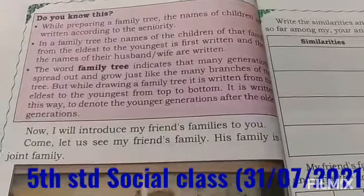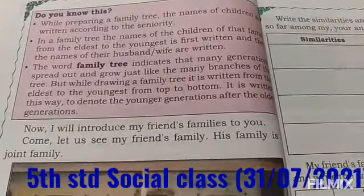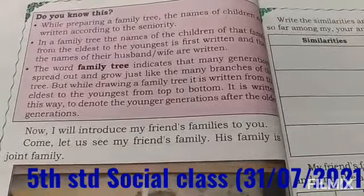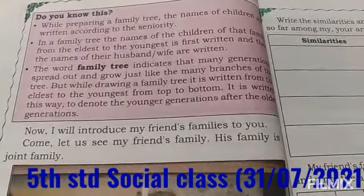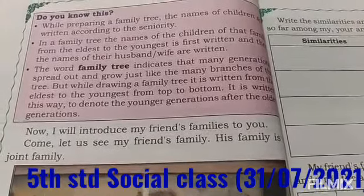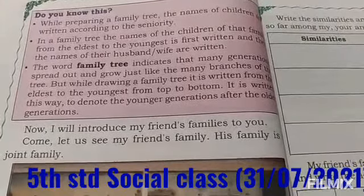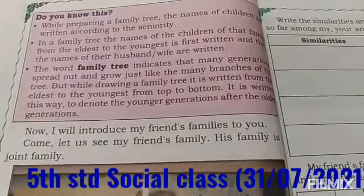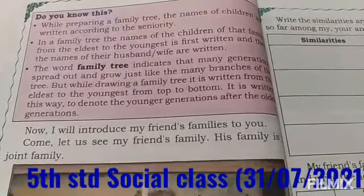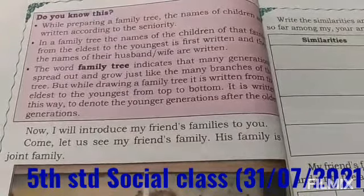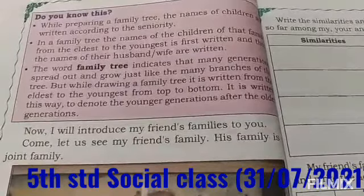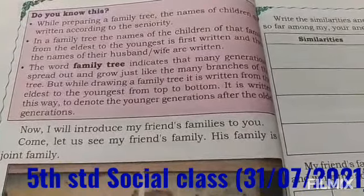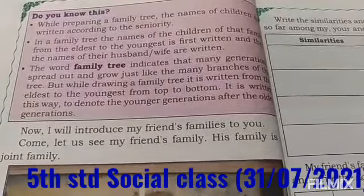So now tell me: what is joint family? Joint family means a family where more than two generations are living together in the same house is called a joint family. And the second one is nuclear family. So what is nuclear family? Nuclear family means a family where only two generations are living together in the same house is called a nuclear family.